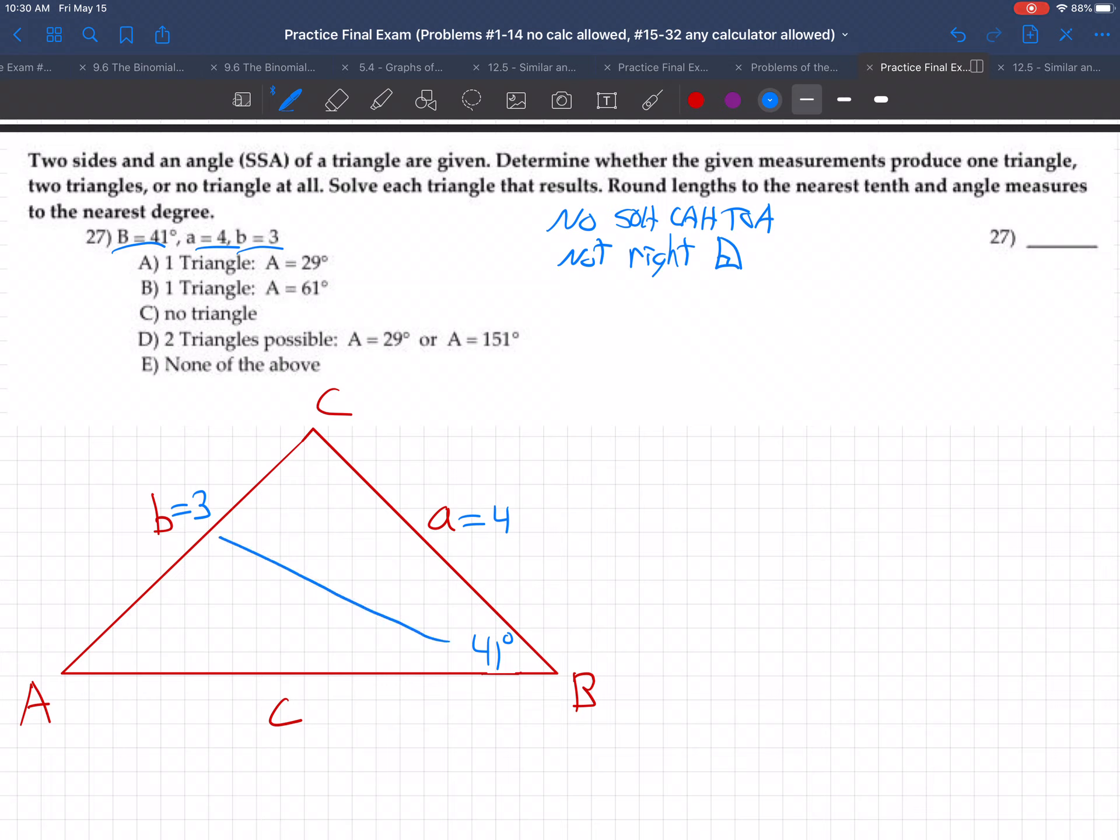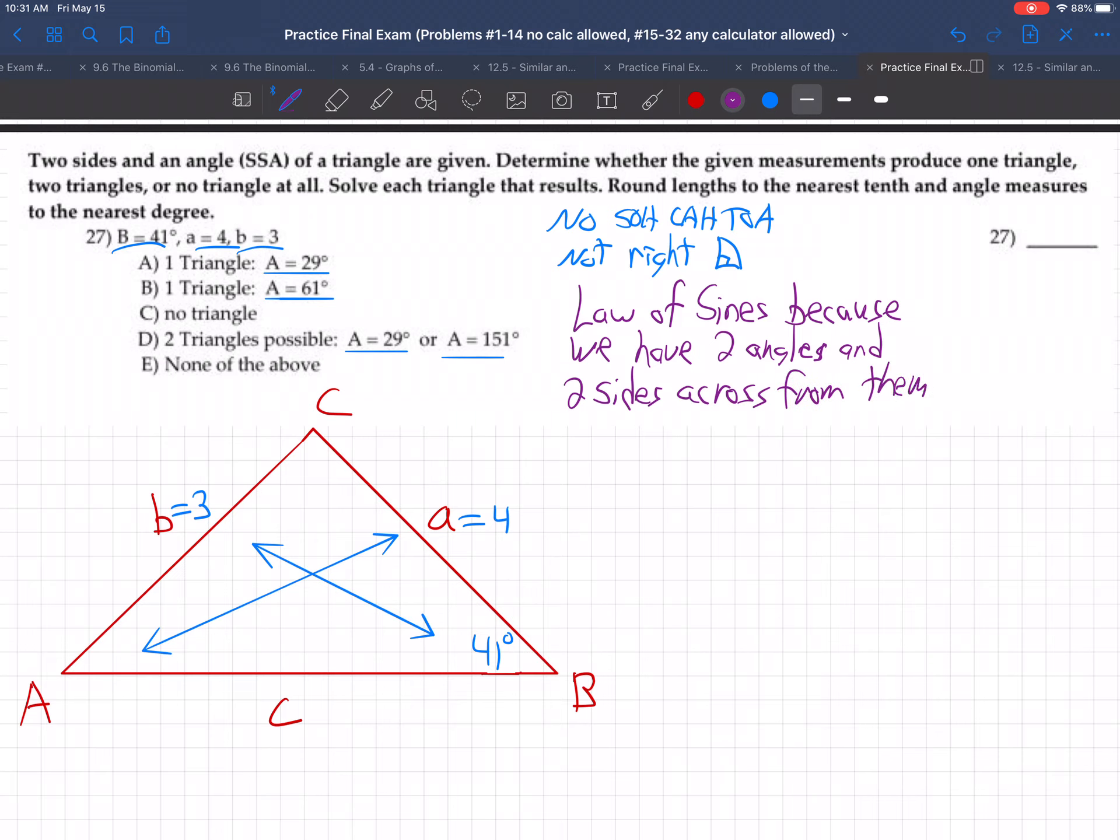Okay, so we have b across from b, and a across from a. We're wanting to find angle A, which is across from side a and b from b, so that's going to clearly be law of sines. We're going to use law of sines because we have two angles and two sides across from them. So that's always law of sines when you have two angles and two sides across from them.